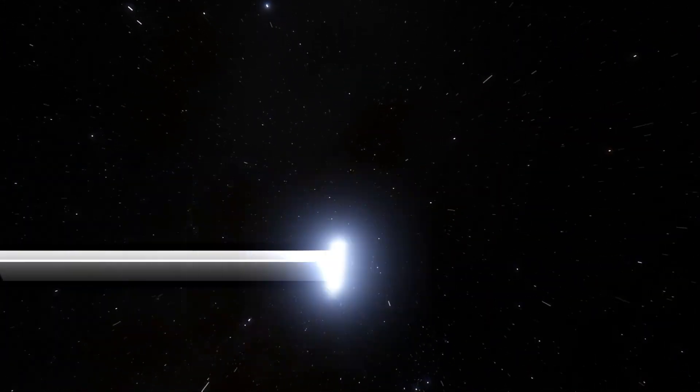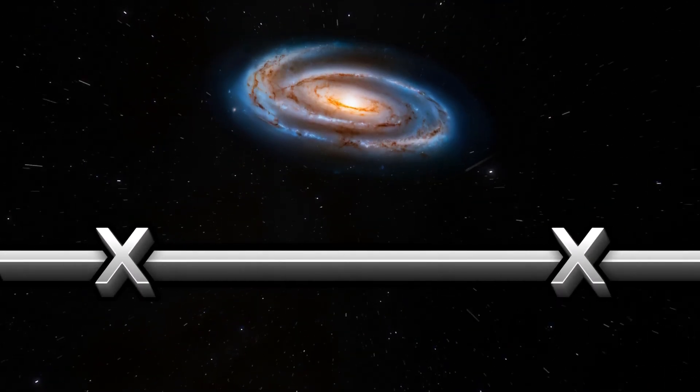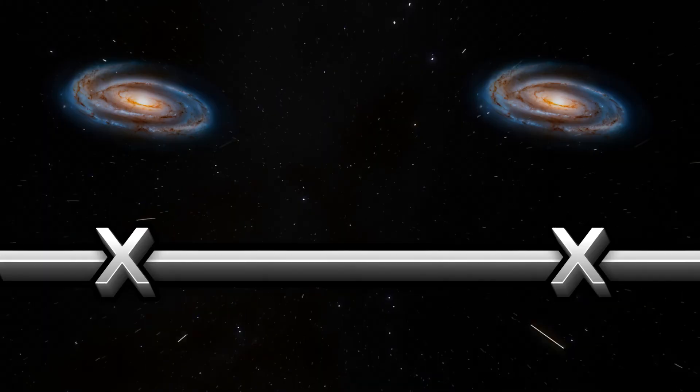To understand spacetime bending, think of it like a sheet of flat paper. Draw two points far apart on the paper. These represent two distant places in the universe.